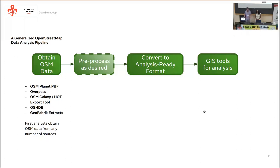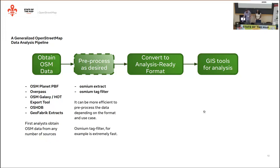A lot of us are pretty used to this kind of pipeline when looking to analyze OSM data. You start by obtaining it — downloading the planet PBF, using tools like Overpass, OSM Galaxy, HOT export tool, Geofabric extracts, or for history data, the OSHDB. If you want to do some pre-processing, you can use the Osmium tool or something similar to process data while it's still a PBF.